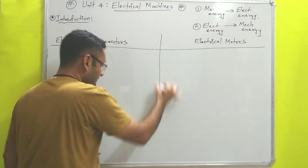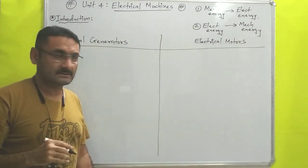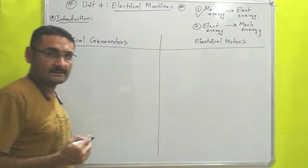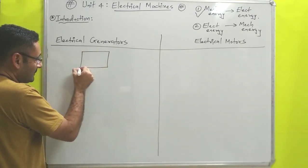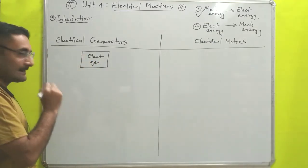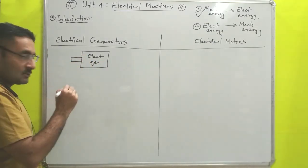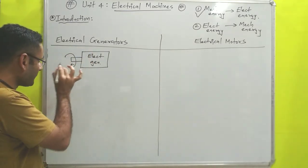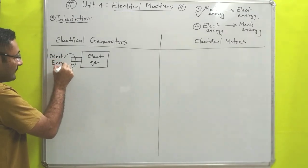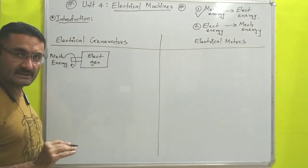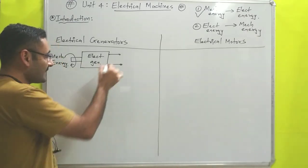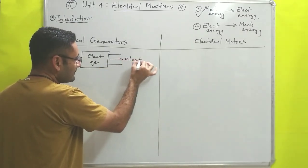We will take the introduction of what is an electrical generator and what is an electrical motor. An electrical generator is such a device which will convert mechanical energy into electrical energy. An electrical generator has one shaft — if you rotate this shaft, you are supplying mechanical energy at the input side. At the output side of the electrical generator, you will get current, that means you will get electrical energy.